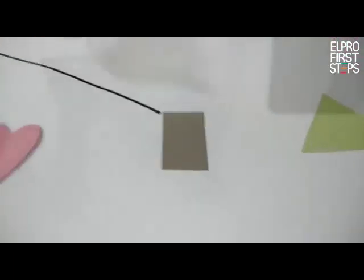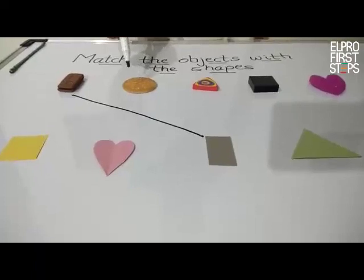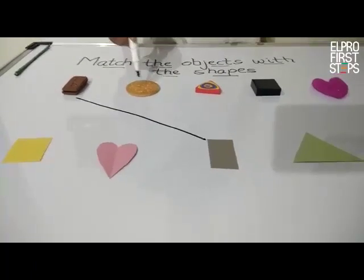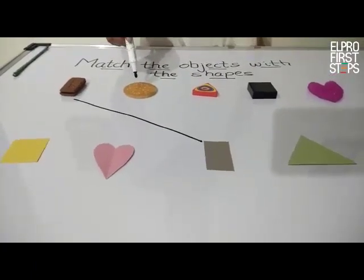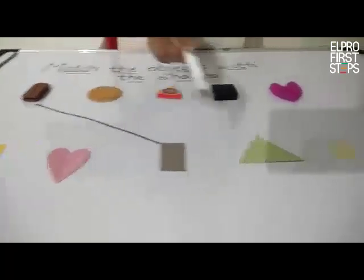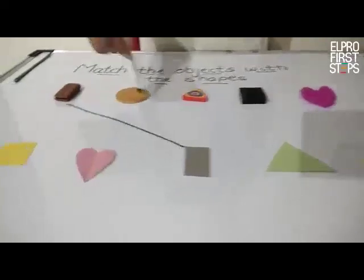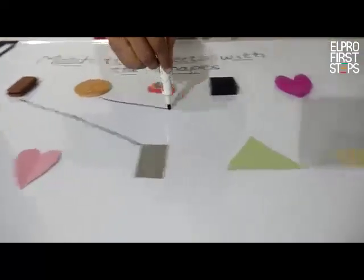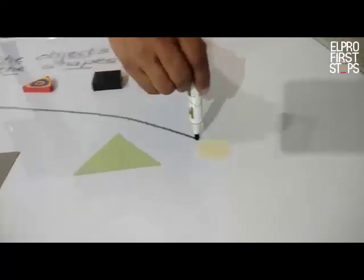Let's go to the next object. We have a circle shape cookie or a biscuit. Now can you see a circle shape in the second line? Yes, there is. Let's match this as well. Let's draw a line and match the shapes with the object.